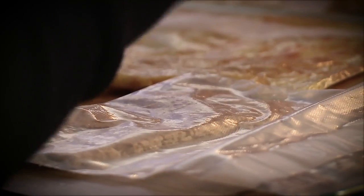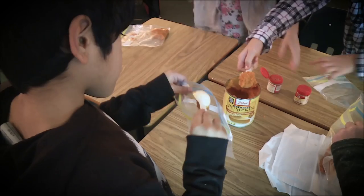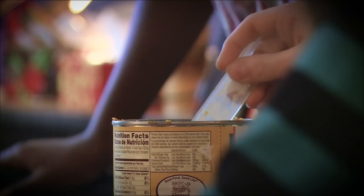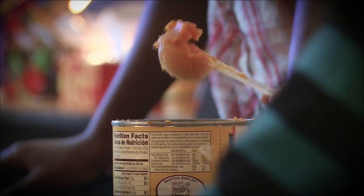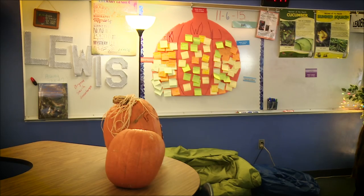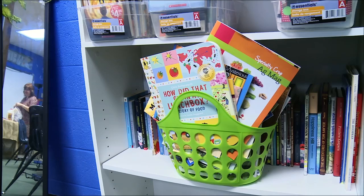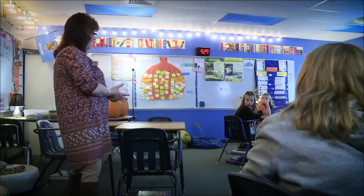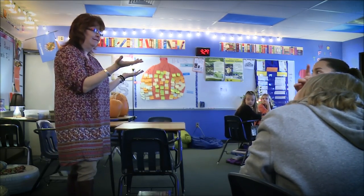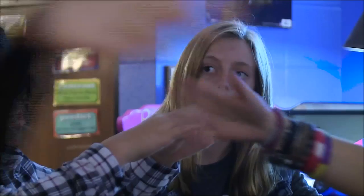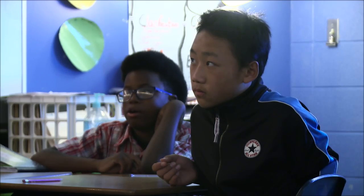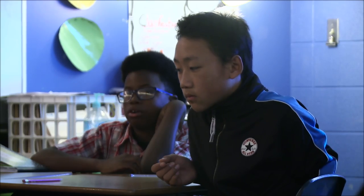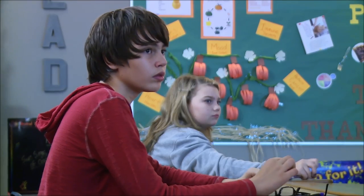Today we are going to do pumpkin pie in a bag. Our whole focus this last week has been about pumpkins and the life cycle of pumpkins. We've read some fiction and nonfiction text about pumpkins and their growth. We talked about the different parts of a pumpkin — the meat, the pulp, and the seeds. We separated the seeds from the pulp, and we've roasted pumpkins.